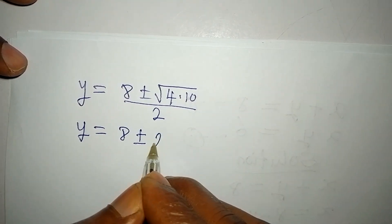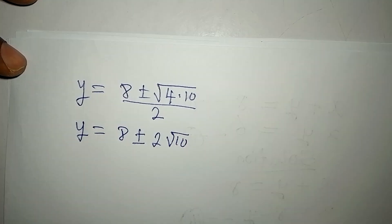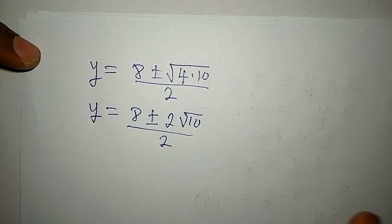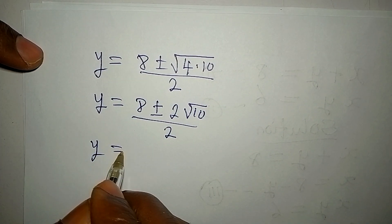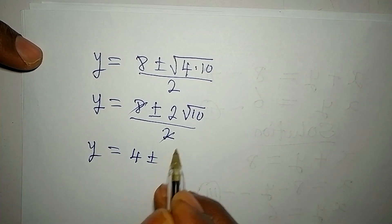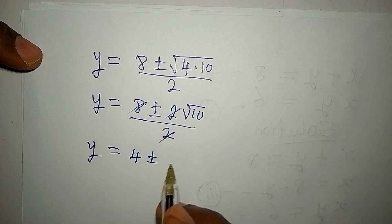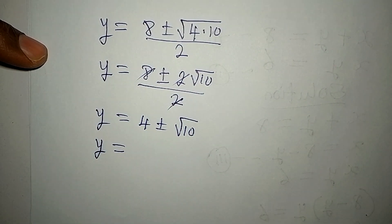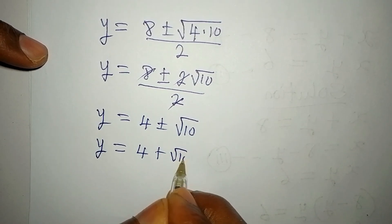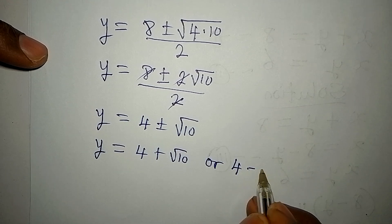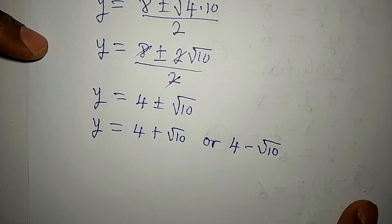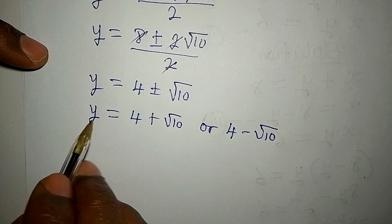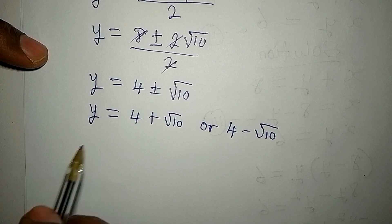So y equals eight plus or minus square root of four times ten, all over two. The square root of four is two, giving us two root ten. Dividing through by two: y equals four plus or minus root ten. Therefore, the two values of y are y equals four plus root ten, or y equals four minus root ten. Now we need to find the corresponding values of x using equation three.